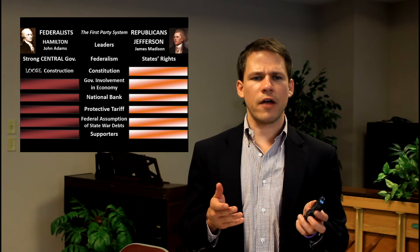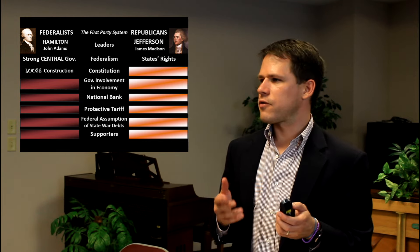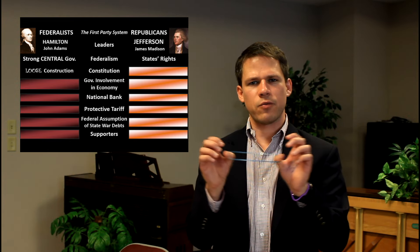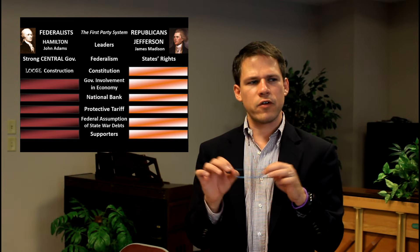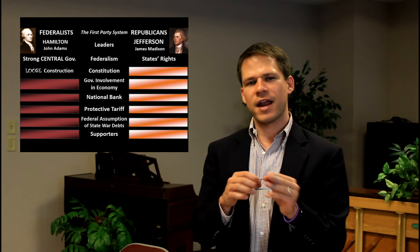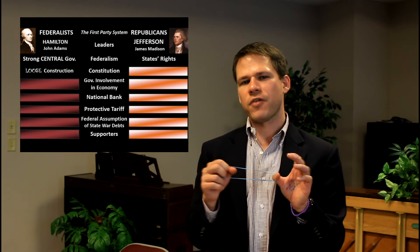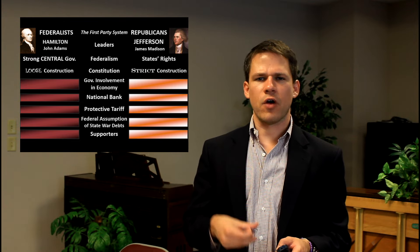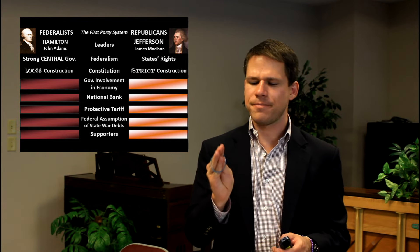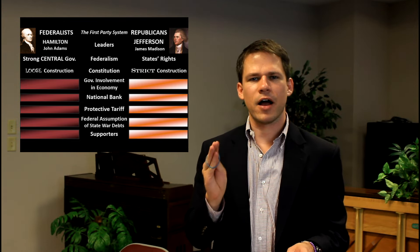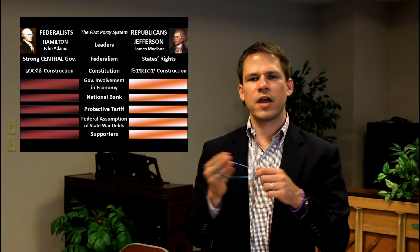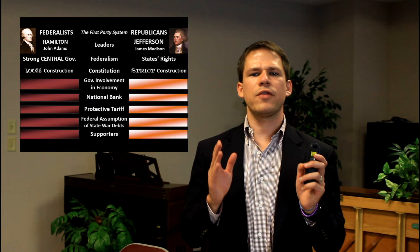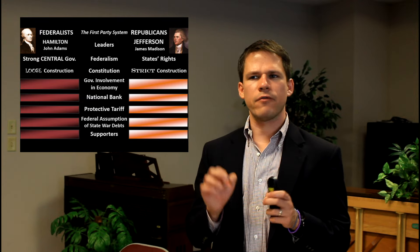As far as the Constitution, the Hamiltonians favored loose construction — if a power is kind of implied, the federal government should have it. The Jeffersonians favored strict construction — if the power is not explicitly there, the government can't do it. They believed only the enumerated powers are the powers of the central government, at least when they're in the opposition.